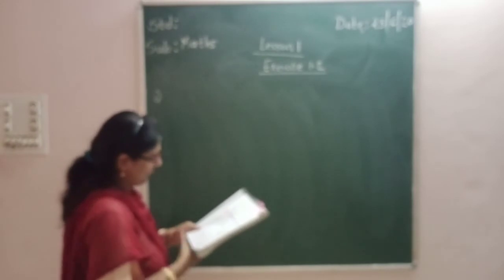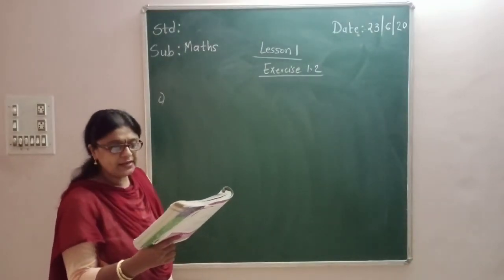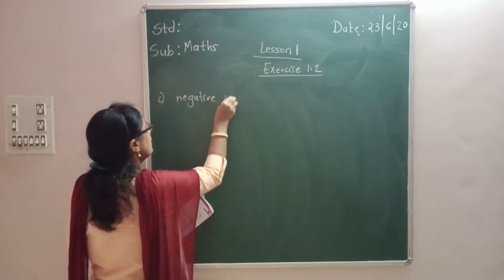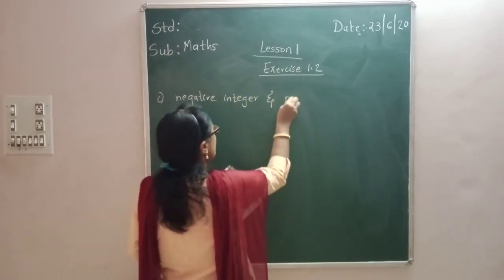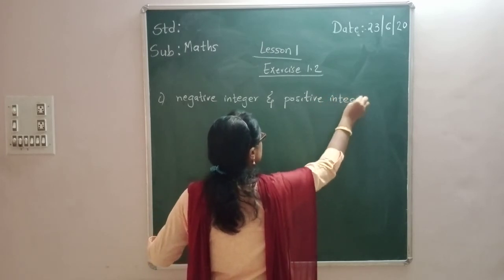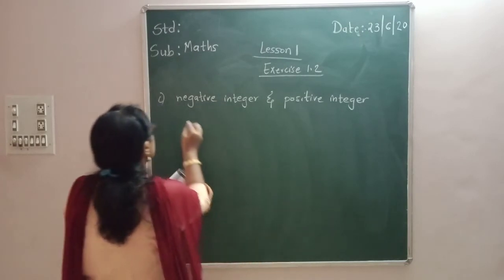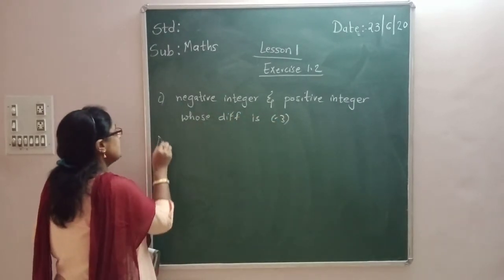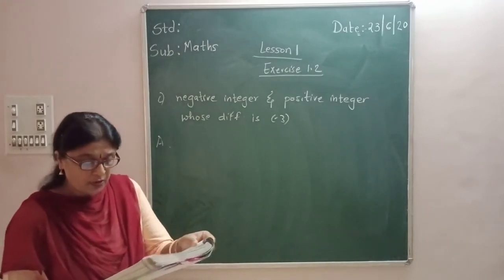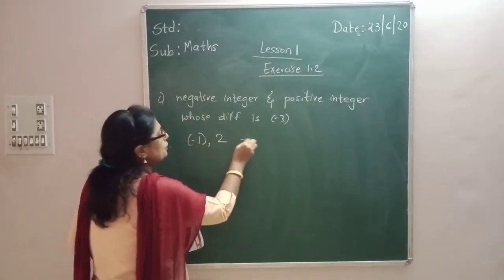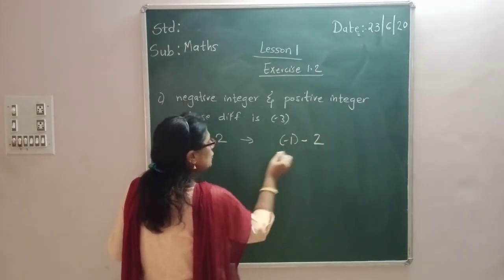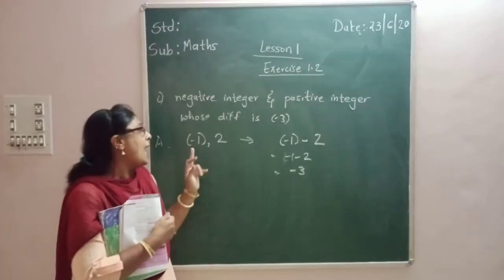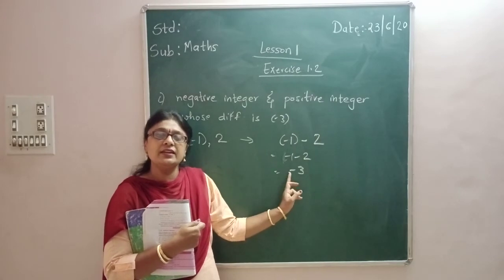Now write a negative integer and a positive integer whose difference is minus 3. One should be negative and one should be positive. Suppose if I take minus 1 and 2 — so minus 1 minus 2 equals minus 3. So one negative integer and one positive integer, and when I take the difference I get minus 3.